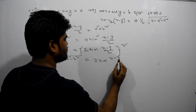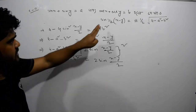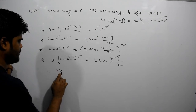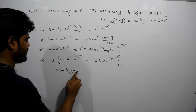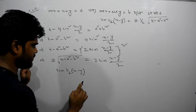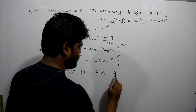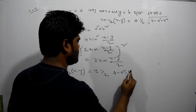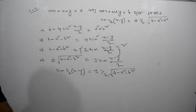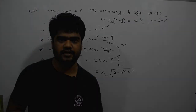So (4 - a² - b²)/4, divided by 2. Therefore sin((x-y)/2) equals ± (1/2)√(4 - a² - b²). Done.